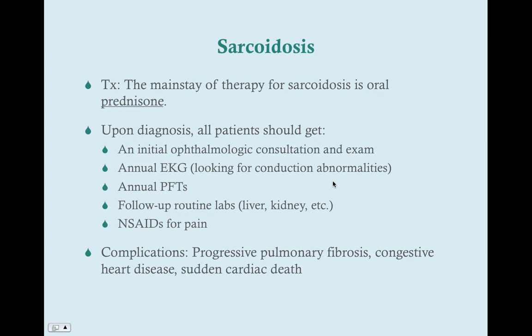The treatment for sarcoidosis is oral prednisone. Usually we start the prednisone when the patient is having significant pulmonary symptoms and we wean them off after a six-month therapy course, so they're not going to be on prednisone their whole lives. If they have severe symptoms, there are steroid-sparing agents, but you're not responsible for knowing those for the USMLE. Once you've diagnosed the patient with sarcoidosis, you need to make a referral to ophthalmology for a slit lamp exam to work up any uveitis that may be present — you always need to make that referral.